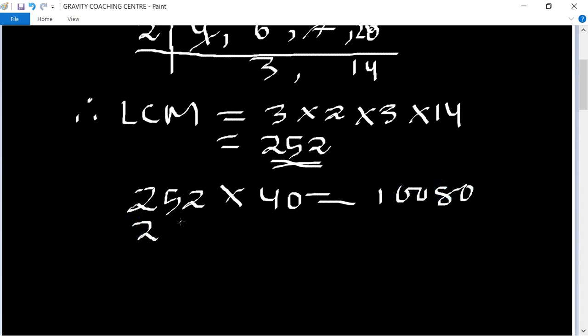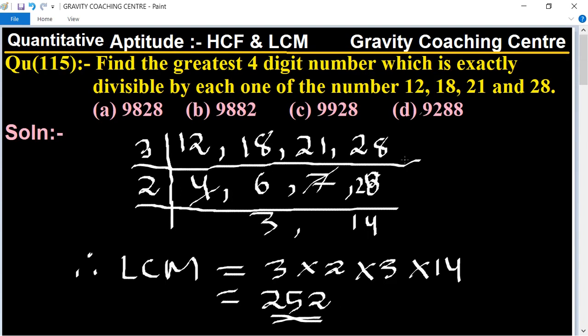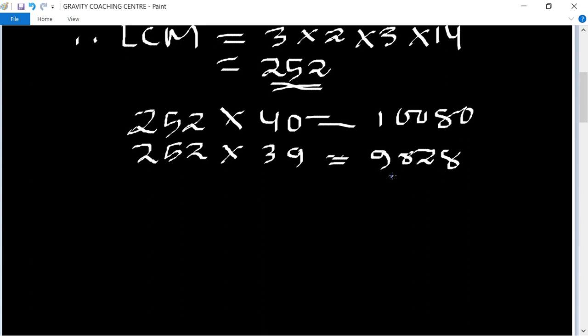And 252 multiply by 39, so their product is equal to 9828. So the greatest four-digit number equal to 9828.